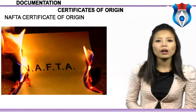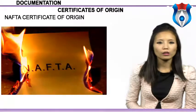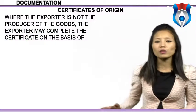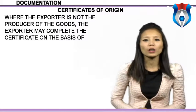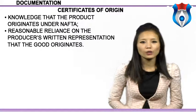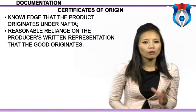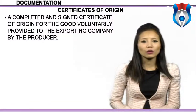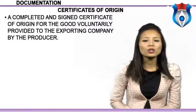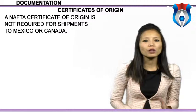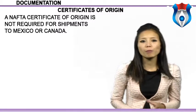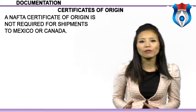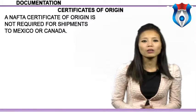The HS number for each product needs to be placed on the NAFTA Certificate of Origin. This document must be completed and signed by the manufacturer of or the exporter of the goods. Where the exporter is not the producer of the goods, the exporter may complete the certificate on the basis of knowledge that the product originates under NAFTA, or reasonable reliance on the producer's written representation. A NAFTA Certificate of Origin is not required for shipments to Mexico or Canada unless the product qualifies for preferential tariff treatment under the NAFTA rules of origin.